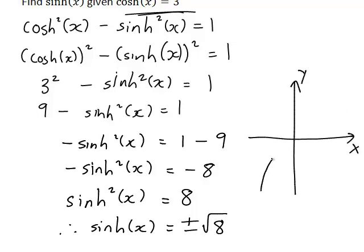An approximate sketch of y equals sinh(x) has this general appearance. In fact, you can see that is reasonable. Y equals sinh(x) does indeed take both positive and negative values. So if cosh(x) is 3, sinh(x) is plus or minus the square root of 8.